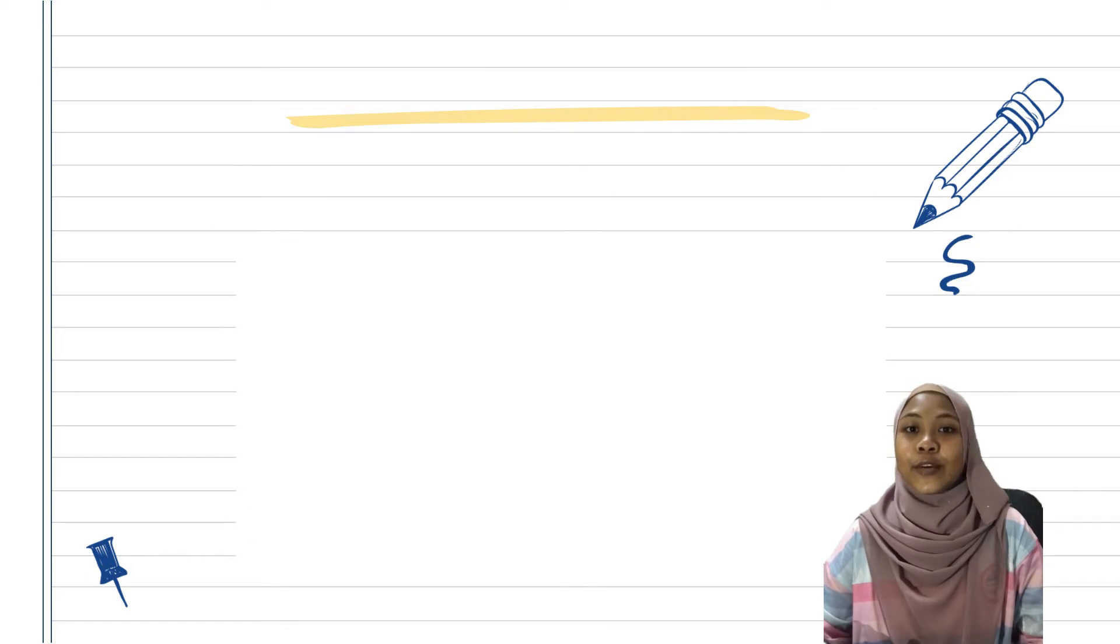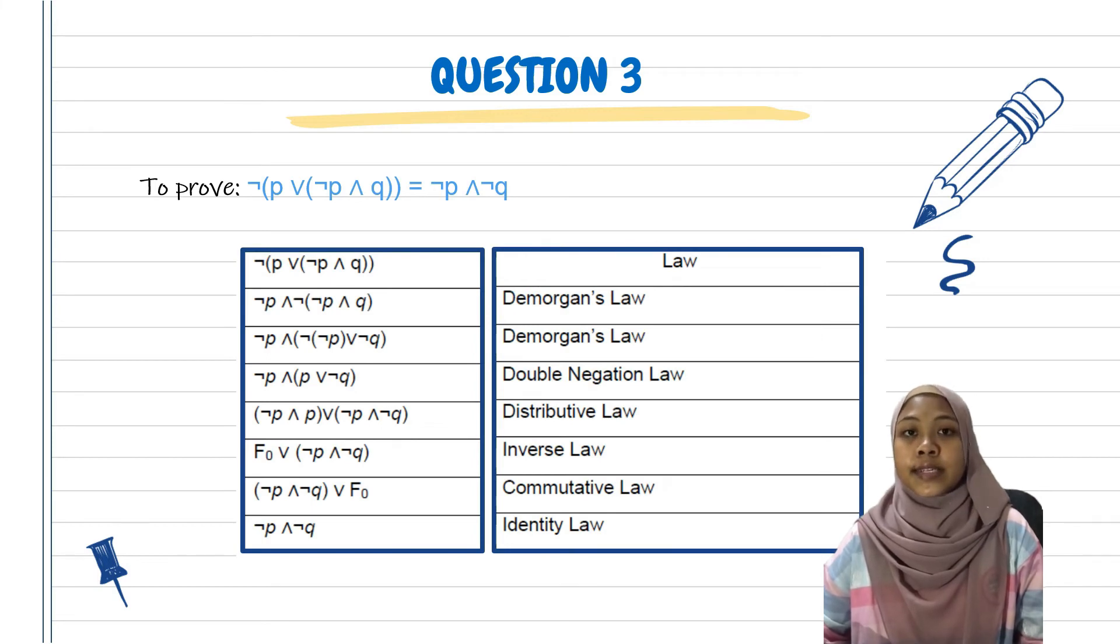We proceed to the third question. The question asks us to prove that the left side is logically equivalent to the right side, meaning NOT(P OR (NOT P AND Q)) is logically equivalent to NOT P AND NOT Q. Usually we will do from the left side first. We use De Morgan's Law. The negation is outside, so we can use this law. The symbol will change from OR to AND, and don't forget to place the negation in front of NOT P AND Q. We use De Morgan's Law again for this bracket, and we will get NOT NOT P OR big OR, because the symbol will change, NOT Q.